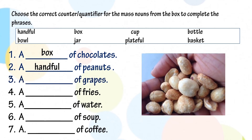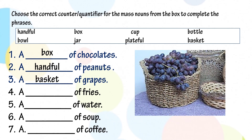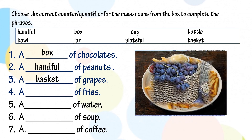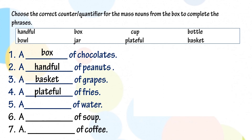Number three, a blank of grapes — we use the quantifier: basket. A basket of grapes. Number four, a blank of fries — we use the counter: plateful. Number five, a blank of water — we use the quantifier: bottle. A bottle of water.